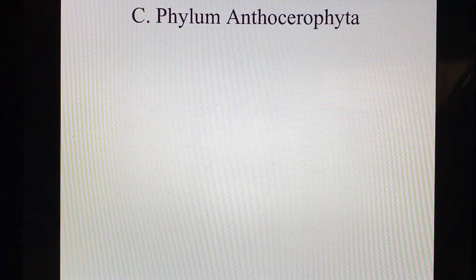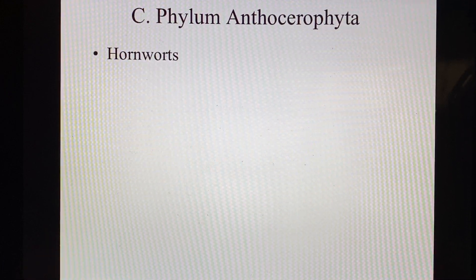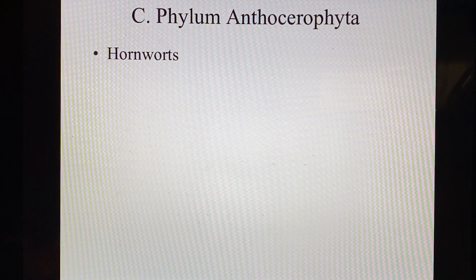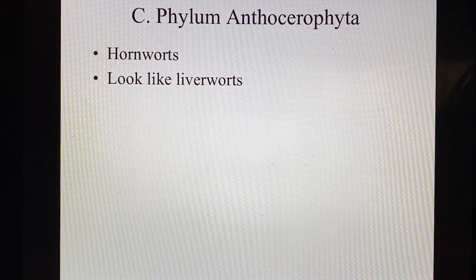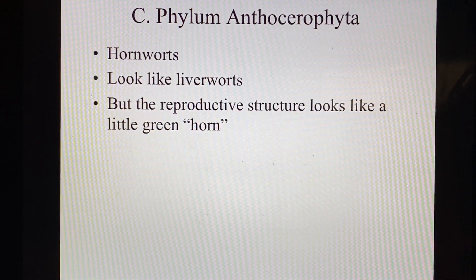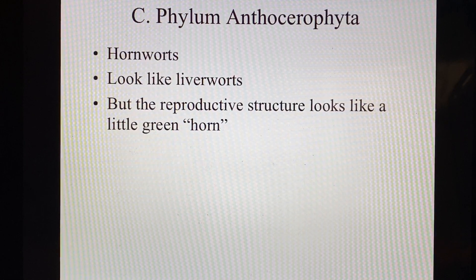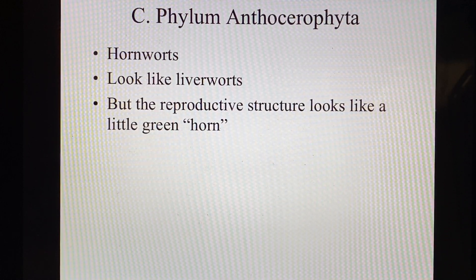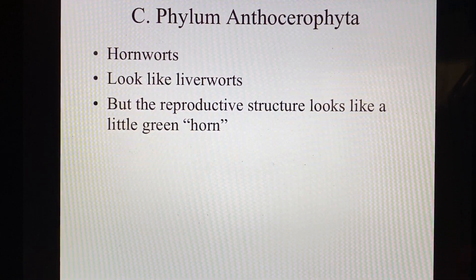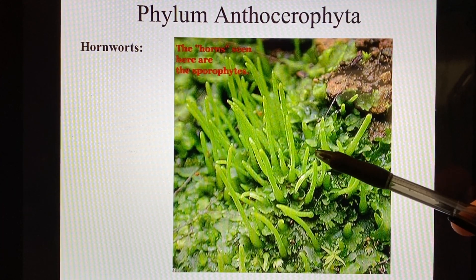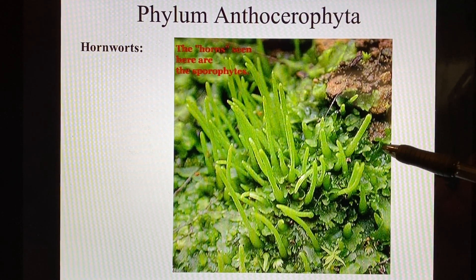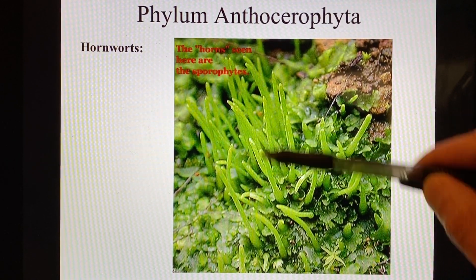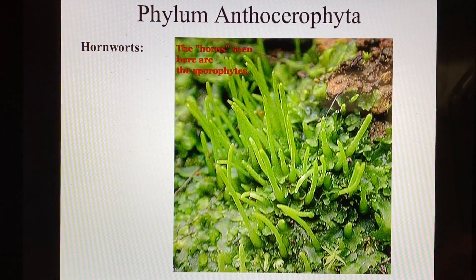The last phylum is the phylum Anthocerophyta. These are hornworts — very, very similar but a little different. They look like liverworts, there's no doubt about it, but the reproductive structure looks like a little green horn. When I say horn, you can look at it two ways: either like the horn on a mammal like a cow, or like a long flute or musical instrument. And there they are — no umbrella. Here are the hornworts. These are the little leaf-looking structures at the bottom, and then these are the little green horns sticking up. That is a hornwort.